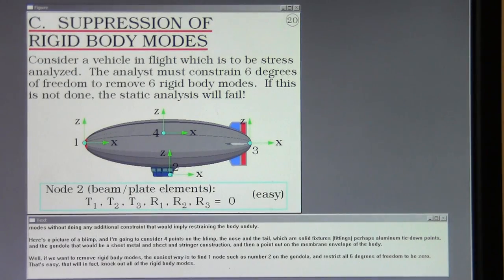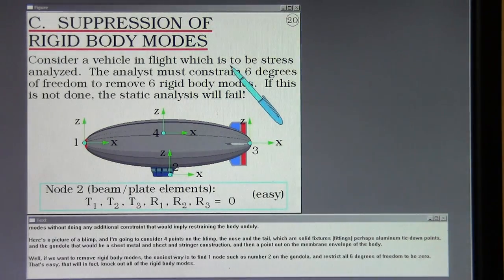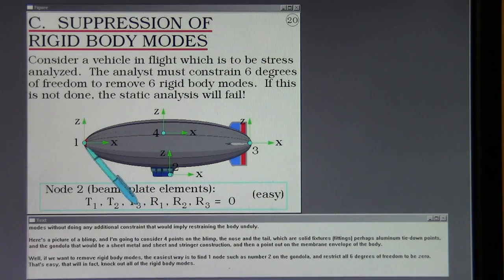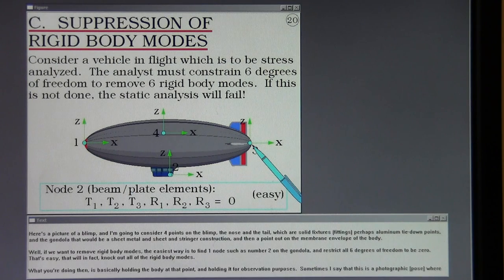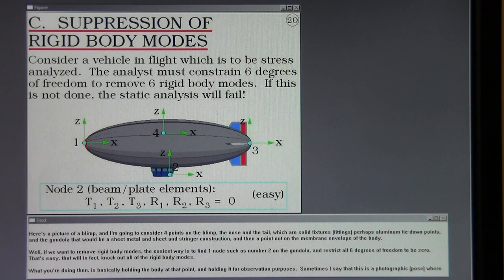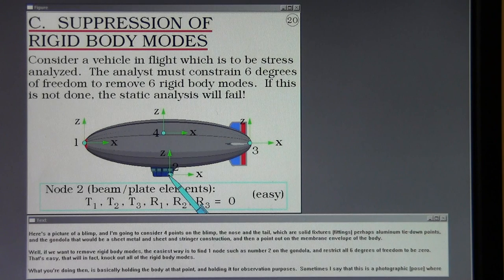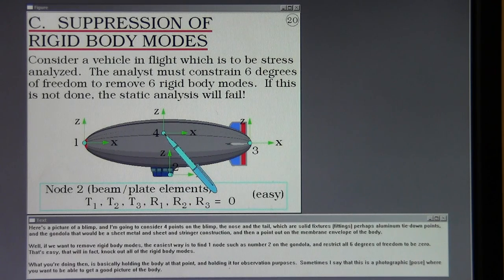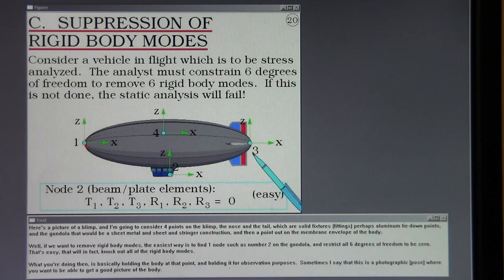Here's a picture of a blimp and I'm going to consider four points on the blimp. The nose and the tail which are solid fixtures, fittings, perhaps aluminum tie-down points. And the gondola that would be a sheet metal and sheet and stringer construction. And then a point out on the membrane envelope of the body. Well, if we want to remove rigid body modes the easiest way is to find one node such as number two on the gondola and restrict all six degrees of freedom to be zero. That's easy.